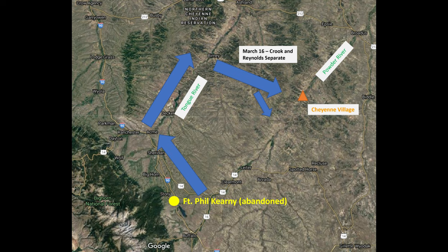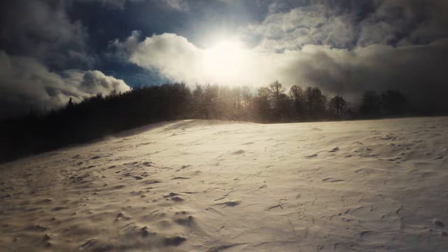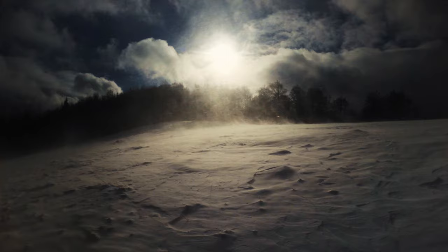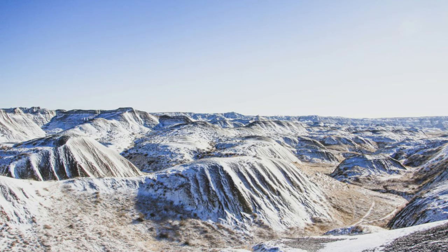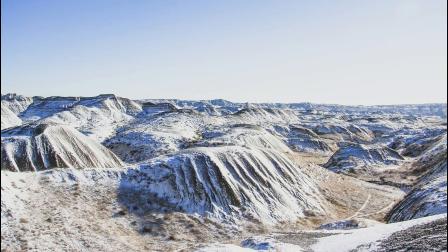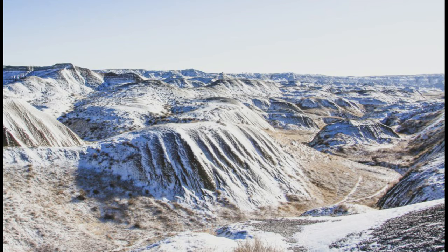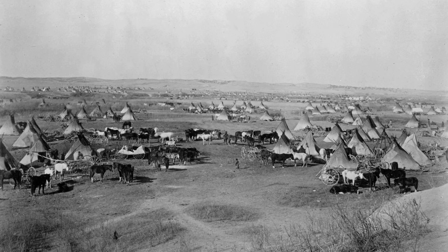Reynolds' strike force moved out at 5 p.m. on the 16th of March, following an Indian trail, and soon stumbled into a snowstorm. Gruard, often on his hands and knees, took the lead and skillfully led the column to within six miles of the Powder River. The column halted around 4 a.m., and the snow was replaced by clear skies and brutal sub-zero temperatures. Around dawn, Gruard returned to the column and informed Reynolds he had found the suspected village along the Powder River and estimated it contained about 100 lodges.